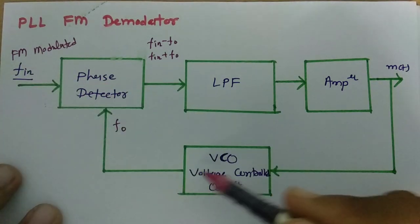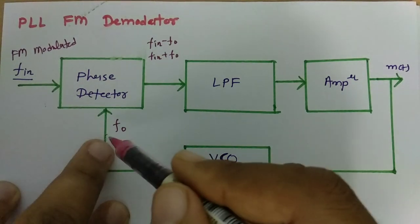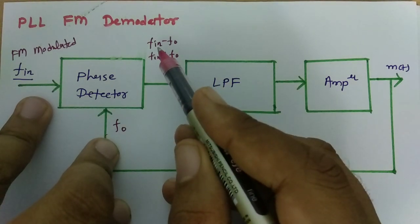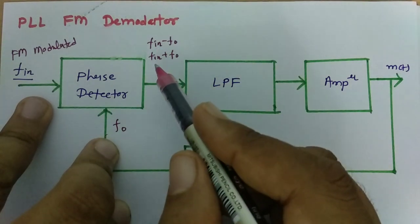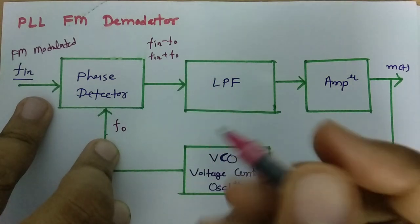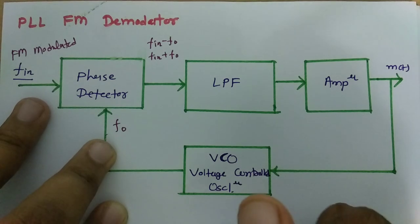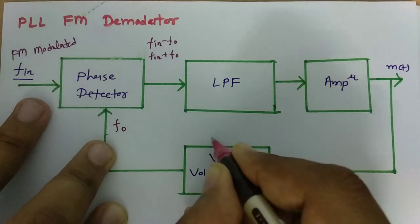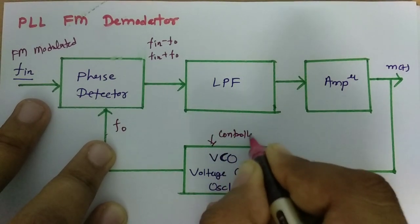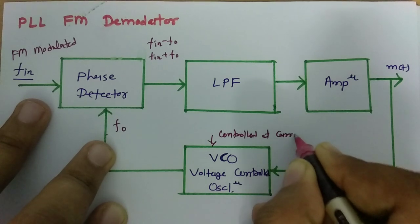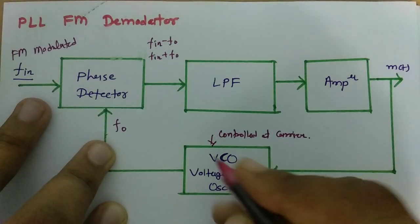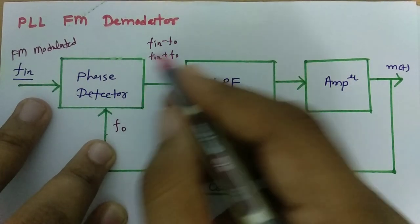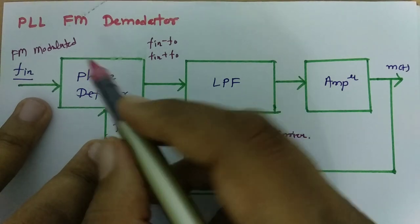When the voltage-controlled oscillator generates frequency F0, you get two components: the lower frequency component F_in minus F0, and the higher frequency component F_in plus F0. Here the VCO is controlled at the carrier signal frequency, so the lower frequency component will carry information related to the modulating signal.